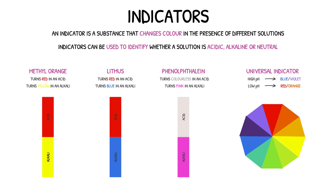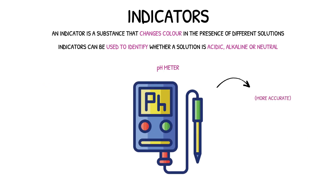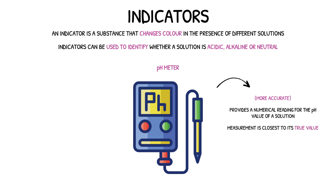However, the accuracy of this indicator can be challenged as the colour changes may be misinterpreted. For the most accurate results, it's advised that a pH meter is used — this is a device that provides a numerical reading for the pH of a solution, and therefore the measurement is closest to its true value.